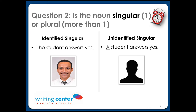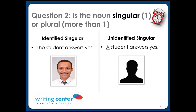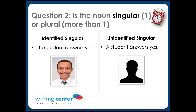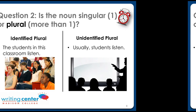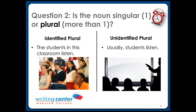The example we've been using is a singular noun. So for an identified singular noun, use 'the,' as you see in the left column. And for an unidentified singular noun, use 'a,' like in the right column. But what about when the noun is plural? Let's take a look at how using articles is a bit different with plural nouns.